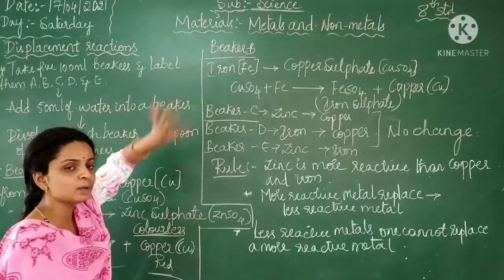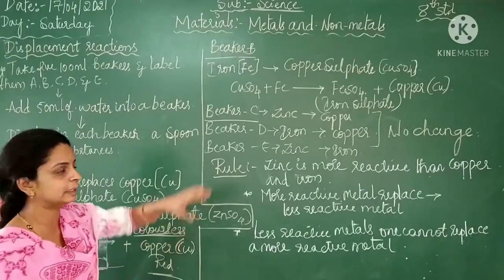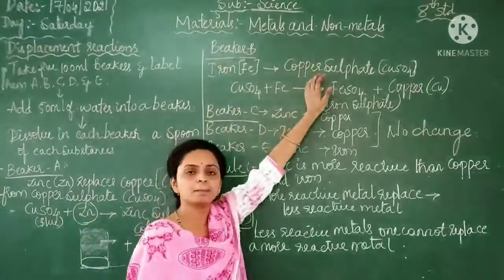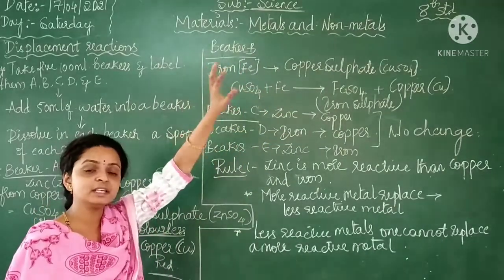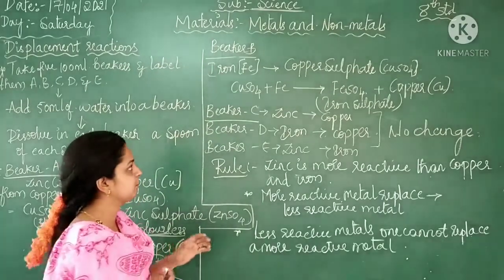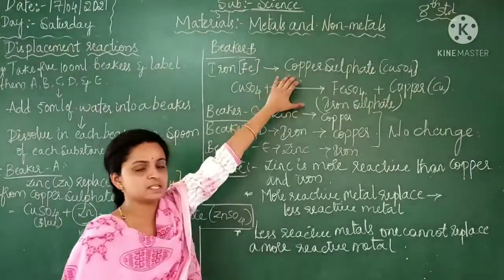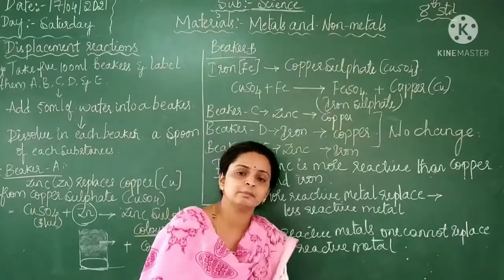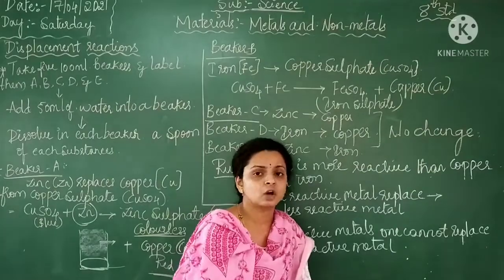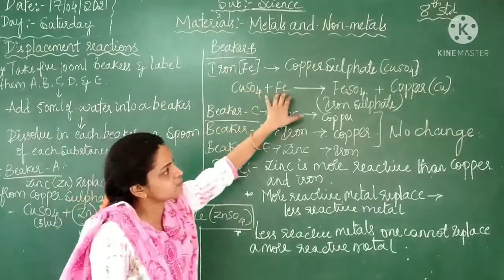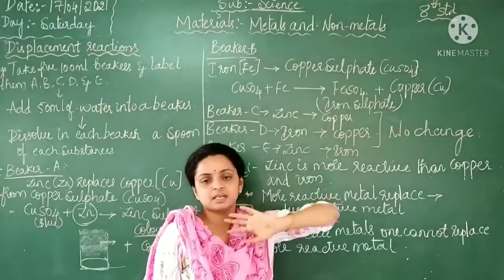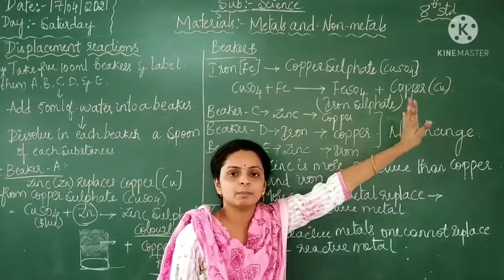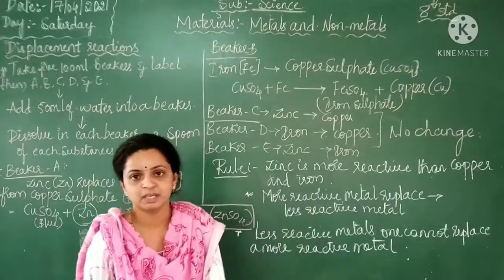Next, beaker B — how it reacts. Which metal can be replaced? The iron — the second substance in the beaker is iron. Iron replaces the copper sulphate. When iron reacts with copper sulphate (CuSO4), iron sulphate (FeSO4) is formed, and the remaining substance is copper, which remains at the bottom of beaker B.